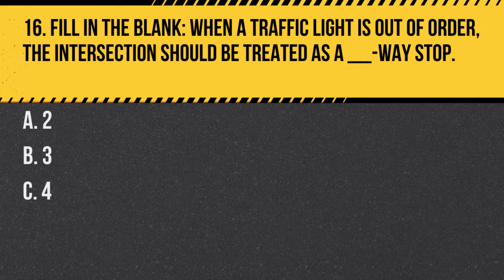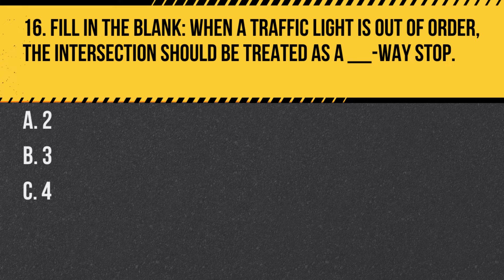Question 16. Fill in the blank. When a traffic light is out of order, the intersection should be treated as a ___-way stop. a. Two. b. Three. c. Four. Answer: c. Four. A non-functioning traffic light means the intersection should be treated as a four-way stop.